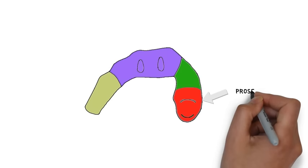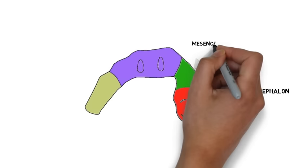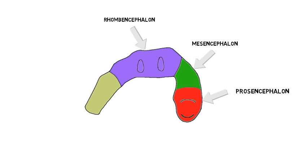They are the prosencephalon, which will eventually form the cerebrum, the mesencephalon, which will eventually become the midbrain, and the rhombencephalon, which will eventually become the rest of the brainstem and the cerebellum. The end of the neural tube will form the spinal cord.